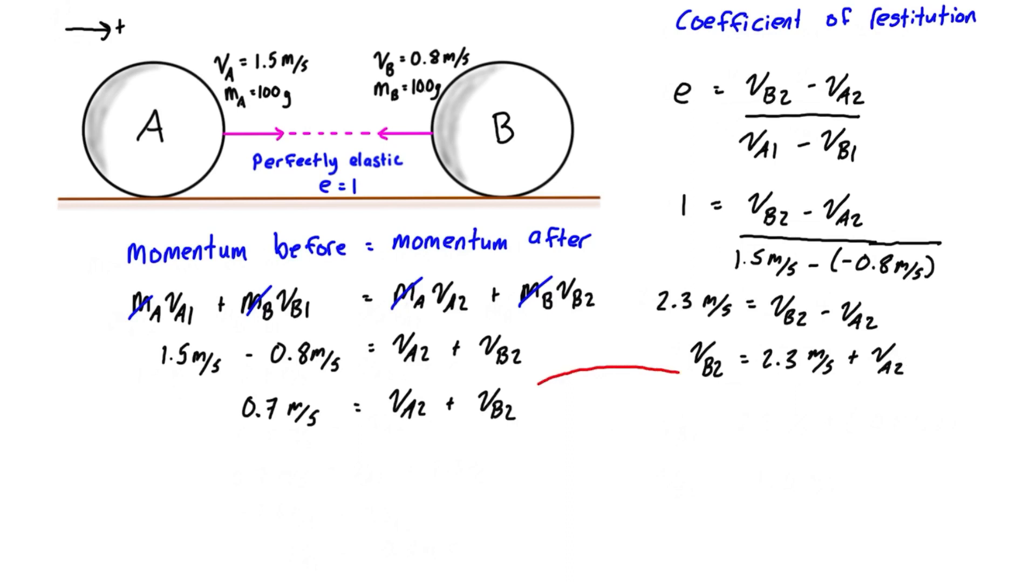We're going to just take this VB2 and substitute it into this equation right there. So we get 0.7 meters per second is equal to VA2 plus everything that we just found. So that's 2.3 meters per second plus VA2. So subtract 2.3 from each side. We get negative 1.6 meters per second is equal to 2VA2. Divide both sides by 2 and we get VA2 is equal to negative 0.8 meters per second.